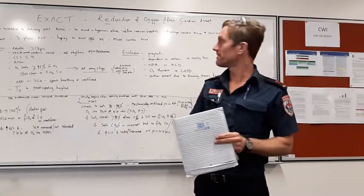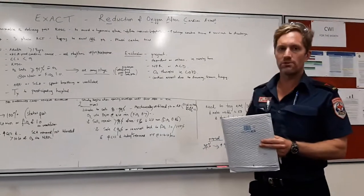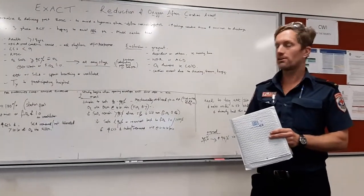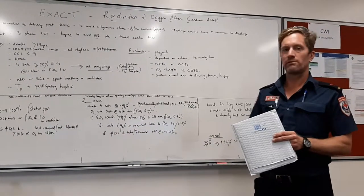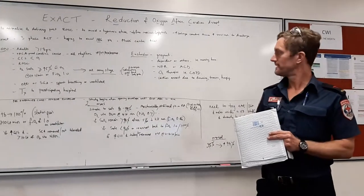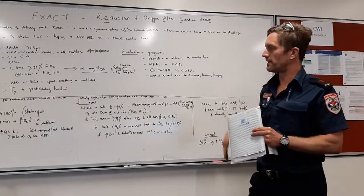Exclusions are if anyone's pregnant, they depend on anybody else such as nursing home patients or requiring high care at home. Anyone with advanced care directives or NFR, and anyone who's likely to require oxygen therapies outside of this, which will be anyone like COPD, and any cardiac arrest due to drowning, trauma, or hanging.